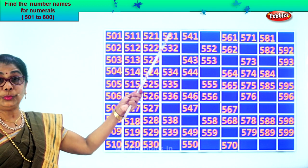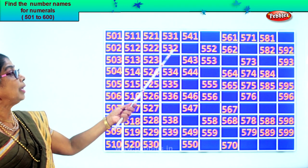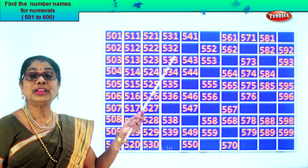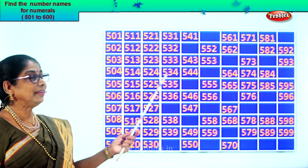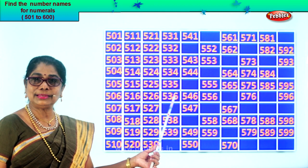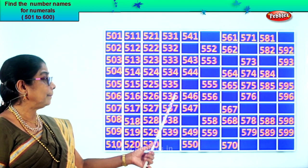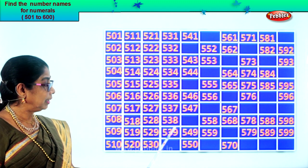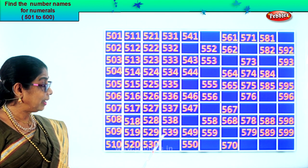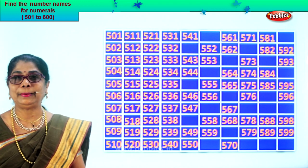After 530 comes 531. Then 532. After 532 comes 533 — good. 534, 535, 536. After 536 comes 537. 538, 539. After 539 comes 540. Okay?